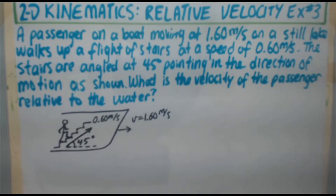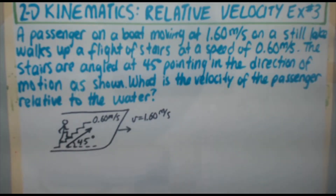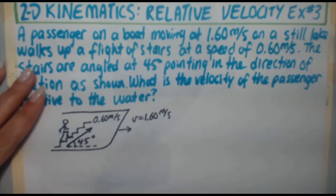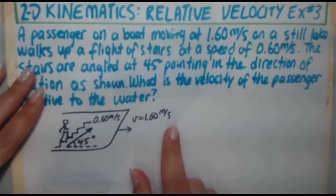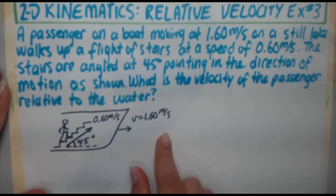In the previous two videos, we've been solving relative velocity problems. In video 48, I solved it by breaking the different motions into X and Y components. In video 49, I solved the problem with the velocities as-is, without breaking them into components. What both videos had in common was that the motion was always perpendicular to another motion. In this question, the person's motion up the stairs is at 45 degrees relative to the boat's motion, so we are actually going to have to use components.